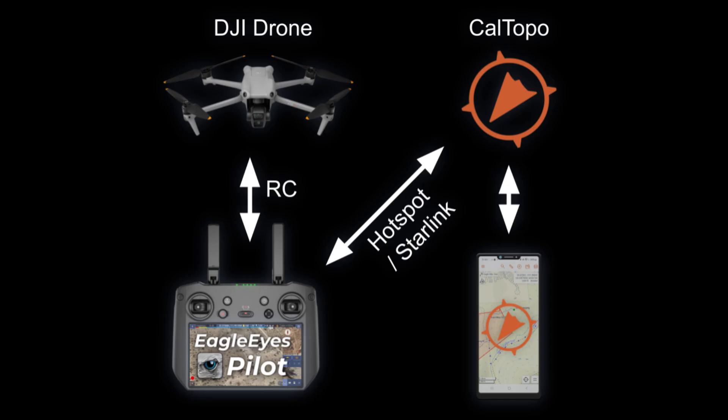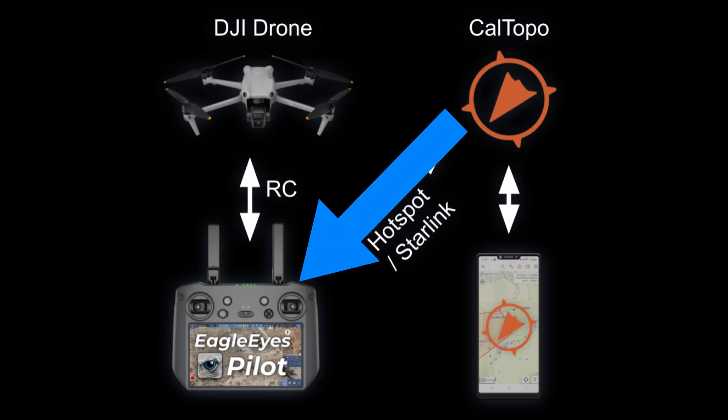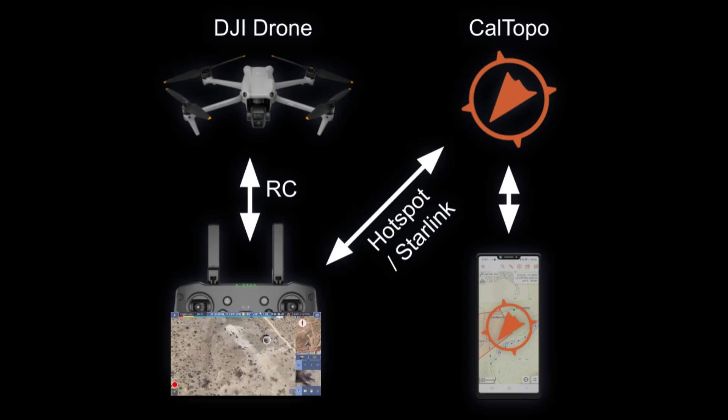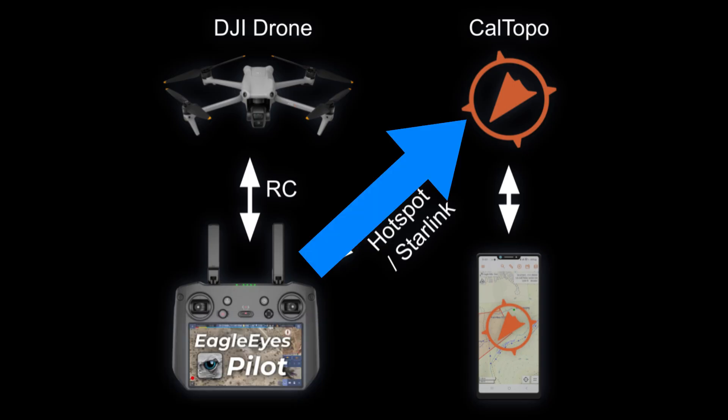In this video we're going to walk through EagleEyes Pilot, the drone app for search and rescue. EagleEyes Pilot is an Android app that runs on DJI drone controllers. It allows you to load your team's CalTOPO map into the RC controller, live track the drone in CalTOPO, detect objects with the computer vision system on the RC controller, and upload your findings into CalTOPO so that the rest of the team can see them.